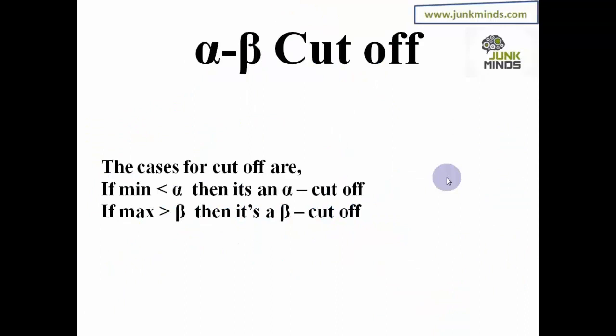I'm going to solve the same problem using alpha-beta cutoff, also called alpha-beta pruning. The solutions will differ but the final answer will always be the same whether I use minmax search or alpha-beta cutoff. For implementing alpha-beta cutoff, there are two kinds of cutoffs and two comparisons: if minimum is less than alpha, I get an alpha cutoff; and if maximum is greater than beta, I get a beta cutoff.